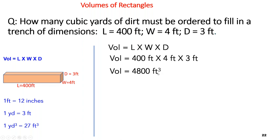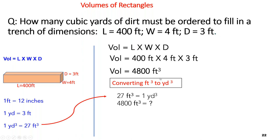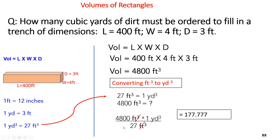But the question asks for cubic yards, not cubic feet — so we haven't fully answered it yet. We need to convert: 1 cubic yard = 27 cubic feet. So: 4,800 cubic feet × (1 cubic yard ÷ 27 cubic feet). Cubic feet cancel, giving 177.78, which rounds up to 178 cubic yards. Always ask yourself whether you have answered what the question is asking for — in this case, cubic yards.